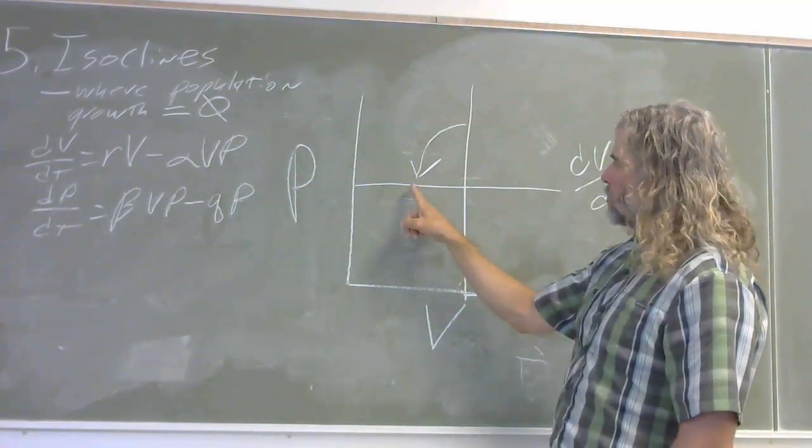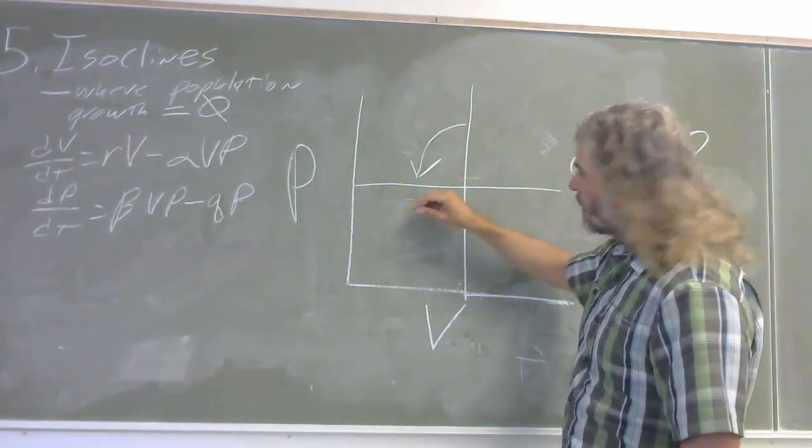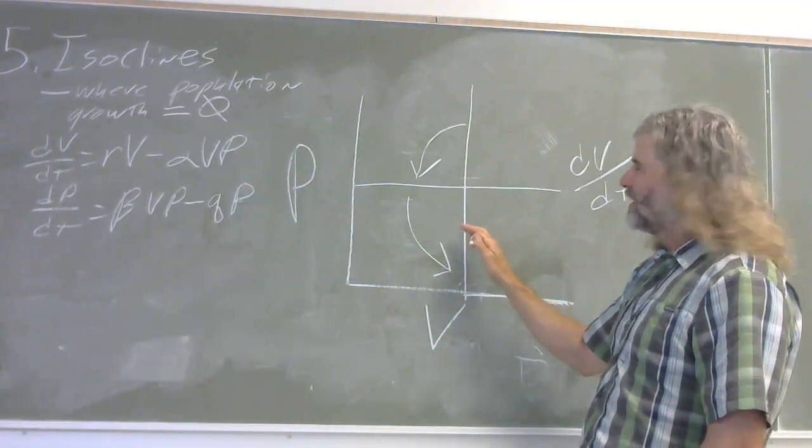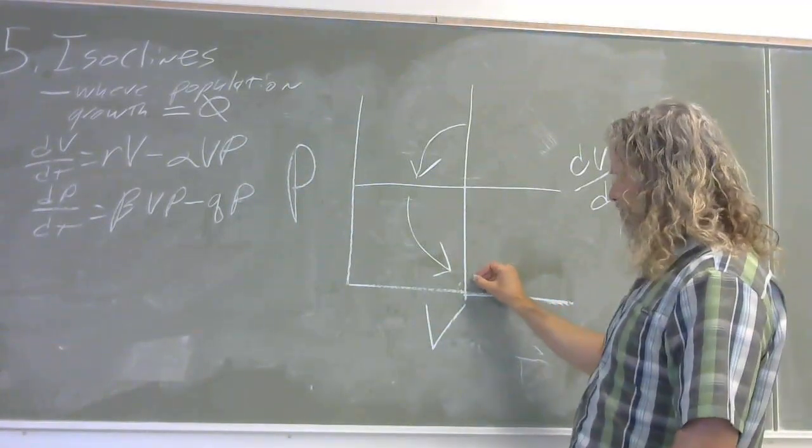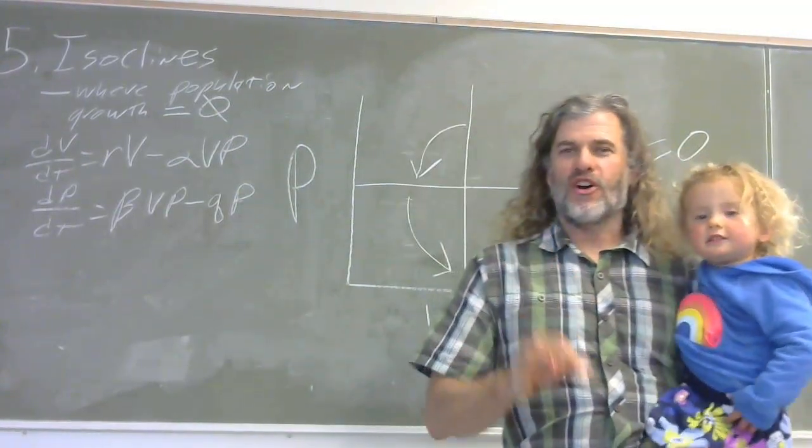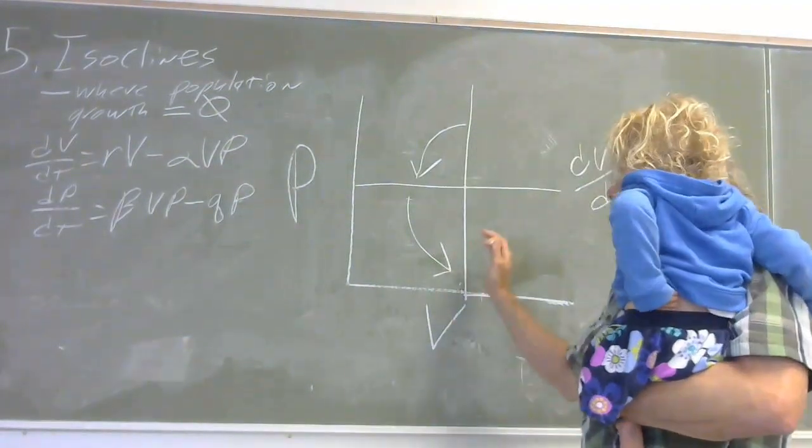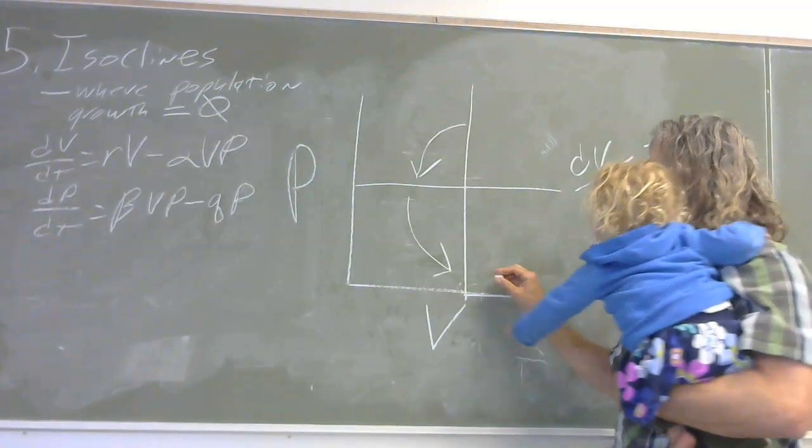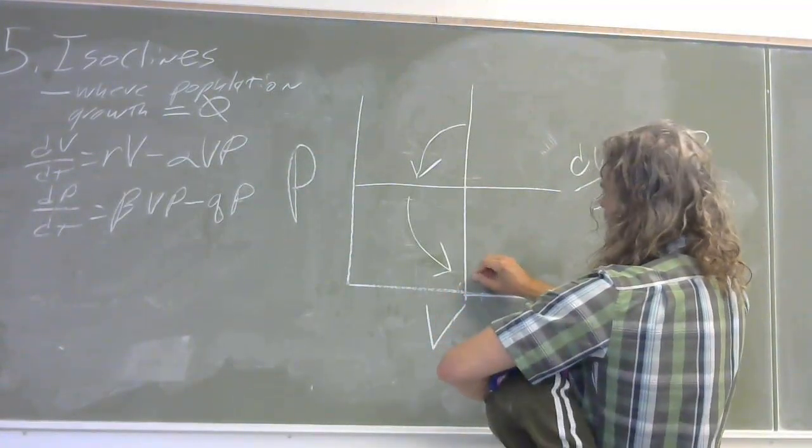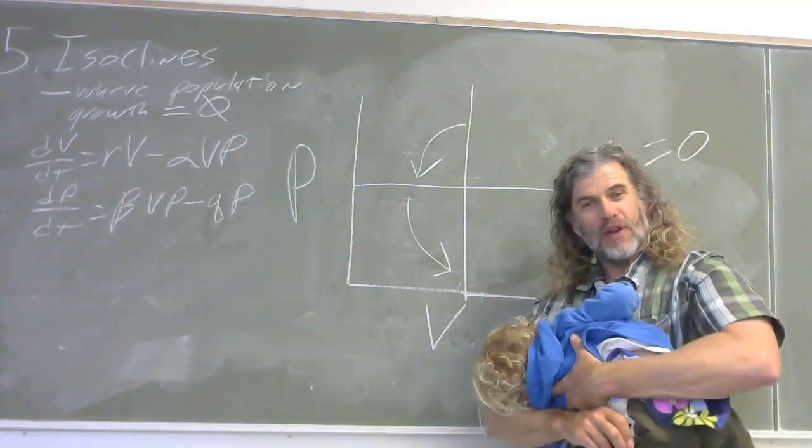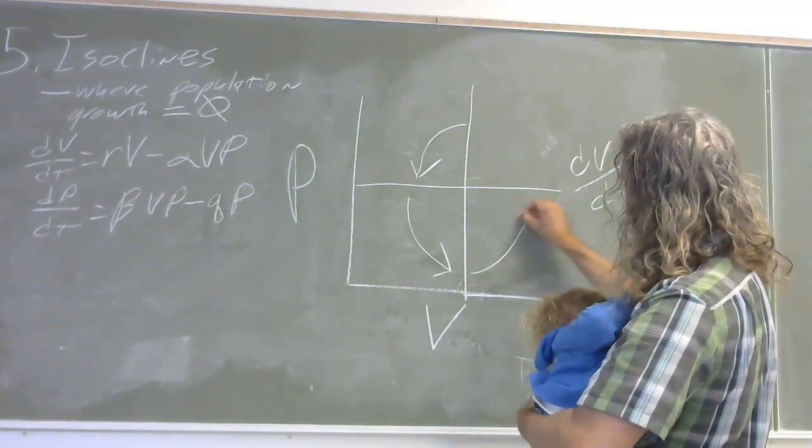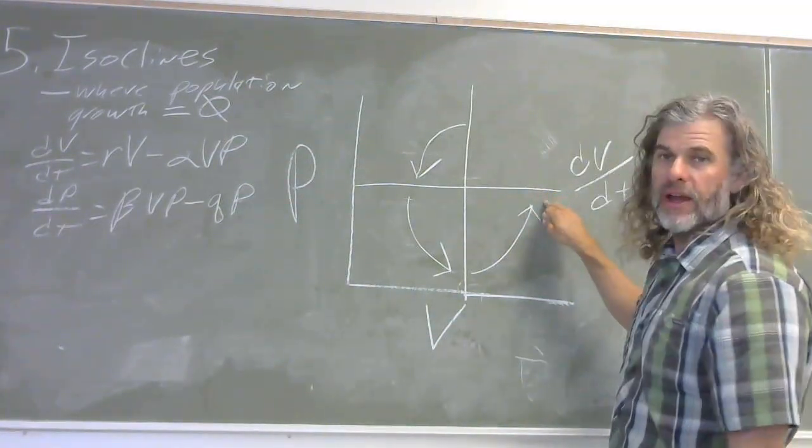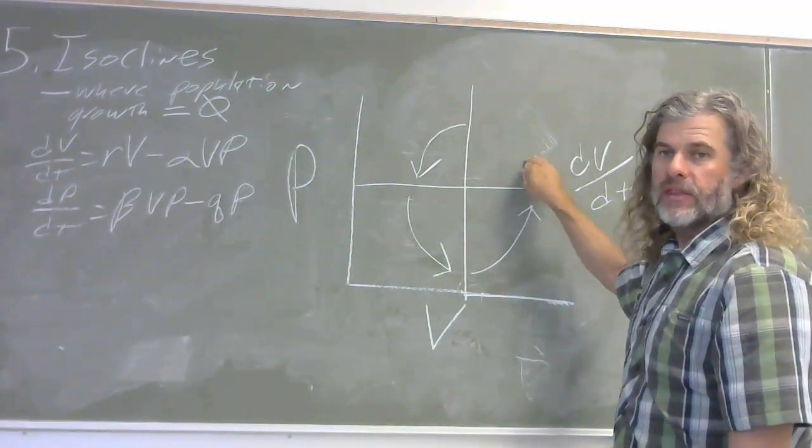But once we get below this isocline here for the prey, they start to become positive, even though the isocline for the predators is still negative. Okay. Moving on. Now, what's going to happen is that we're going to get above the isocline for our prey here. They're going to start, or we're going to be above the isocline for both. They're both going to increase here until we get above the isocline for the prey again, meaning that the predators are so abundant that they start to decline.